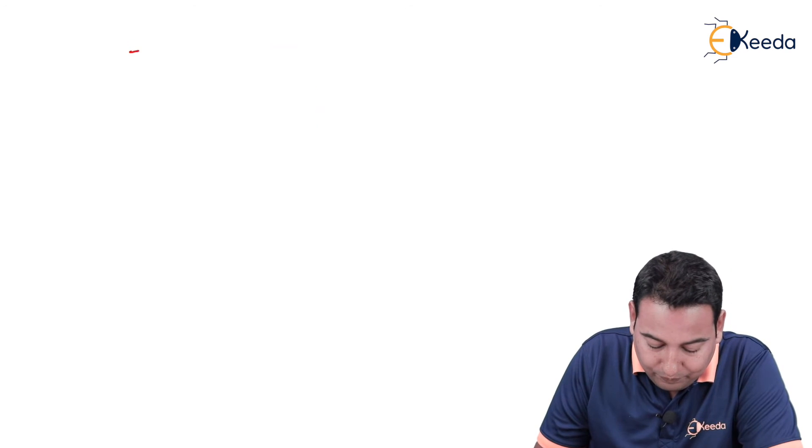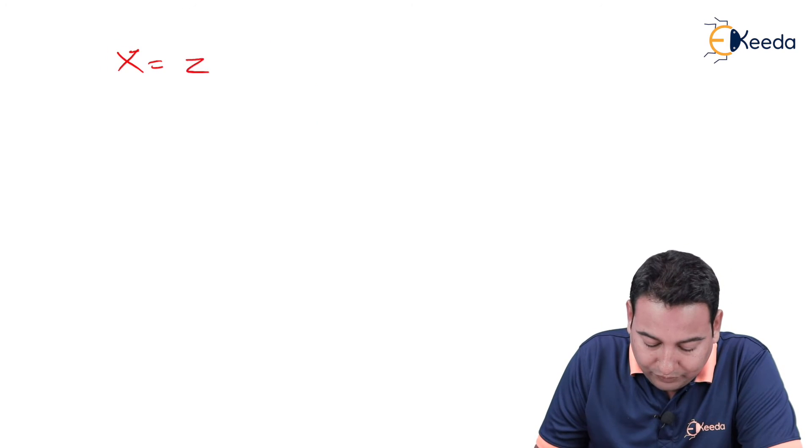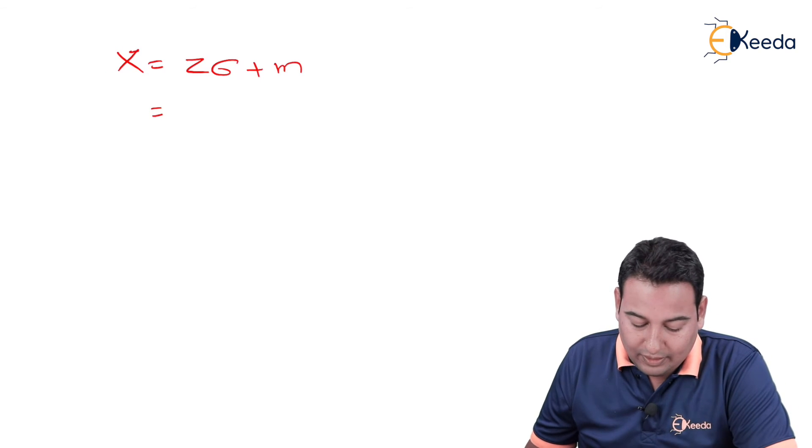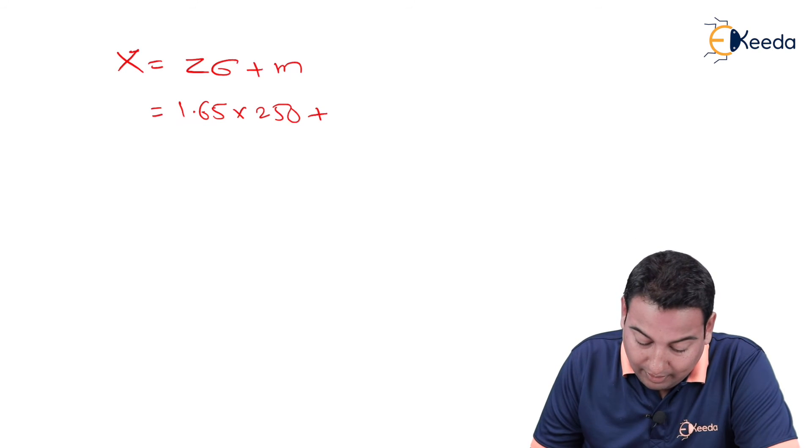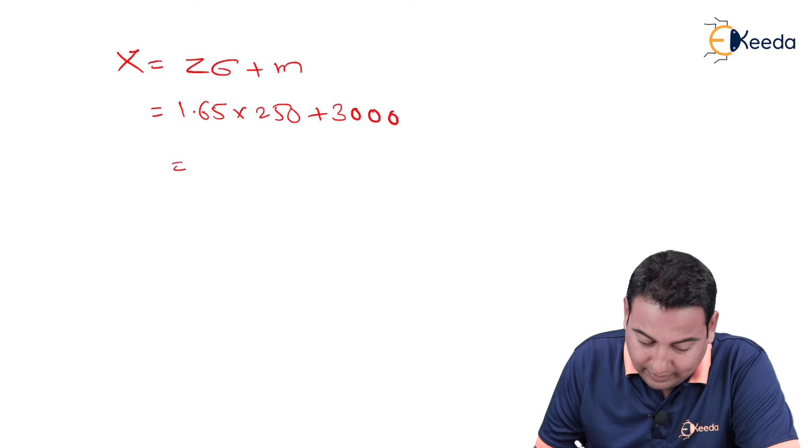Let's discuss the formula. X is equal to Z times sigma plus m. Z we got it as 1.65. Sigma is 250 plus m, m is 3000.